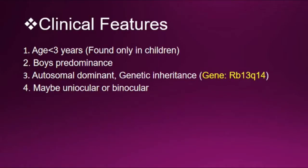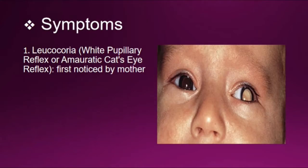Clinical features: age less than three years, found only in children, with boys predominance. It is an autosomal dominant disorder. The gene is called RB1 at 3q14. It may be uniocular or binocular.